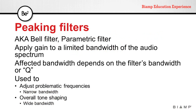Peaking filters, also known as bell filters or parametric filters, can apply gain to a limited bandwidth of the audio spectrum. The affected bandwidth depends on the filter's bandwidth, or Q. Narrow band filters can be used to control problematic frequencies like feedback, hum, or specific noises. Wide band filters can be used for overall tonal shaping.